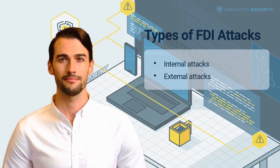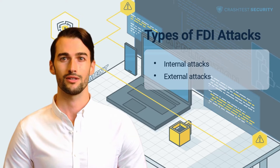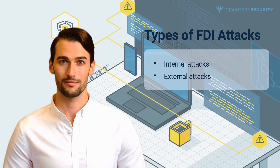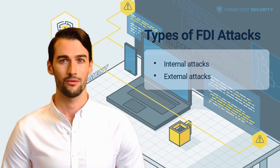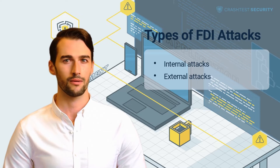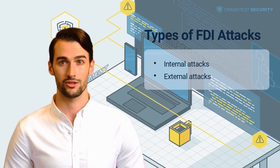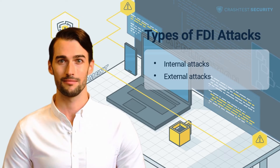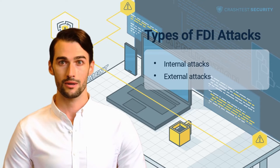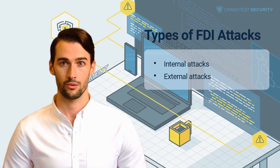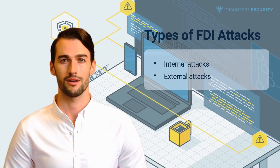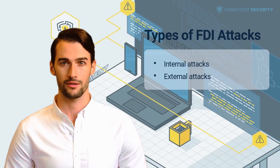External attacks: adversaries carry out this false data injection attack with incomplete information about the power network. As a result, the attacker relies on weaknesses in the physical network security model to eavesdrop, replay, and inject false data into the smart grid. One common approach is to target vulnerabilities in input validation and transport layer security for delivering false data through techniques such as code injection and cross-site request forgery.